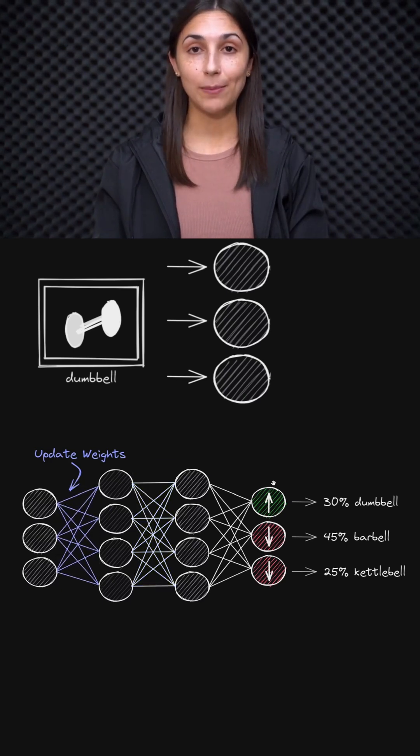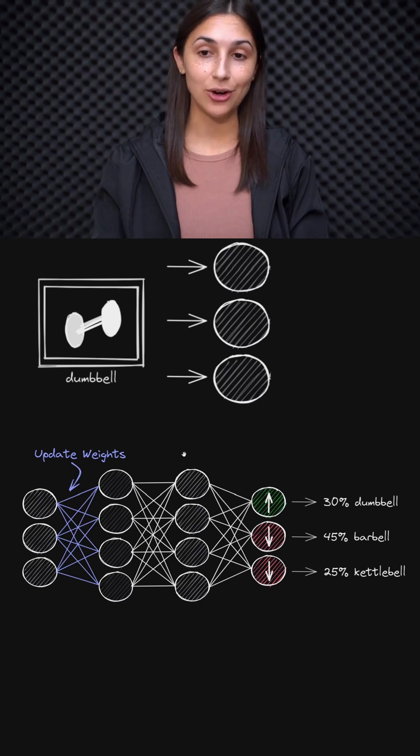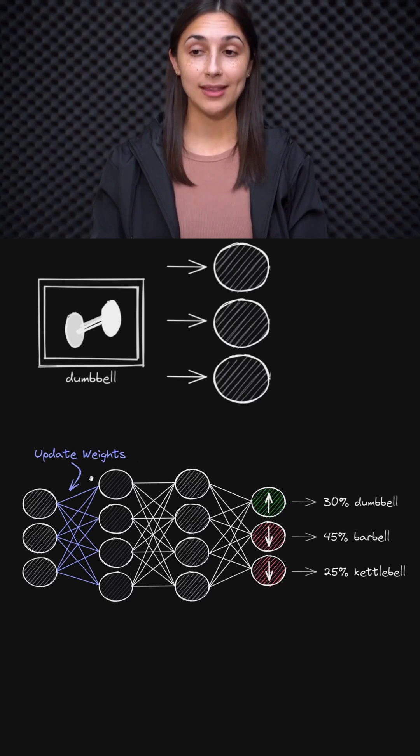We can see gradient descent is jumping backwards from right to left, layer to layer, updating the values of these weights in order to influence the probability output from our network. We're trying to decrease the incorrect classes while we increase the probability assigned to the correct class.